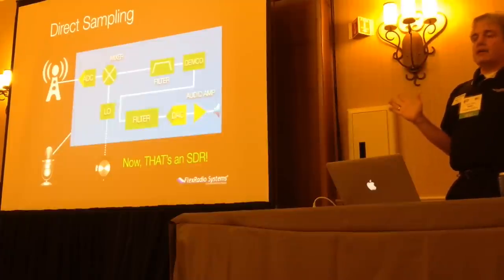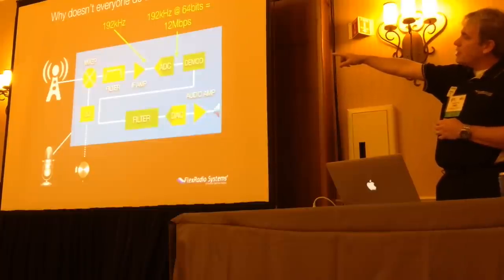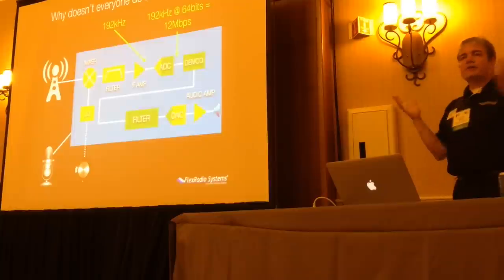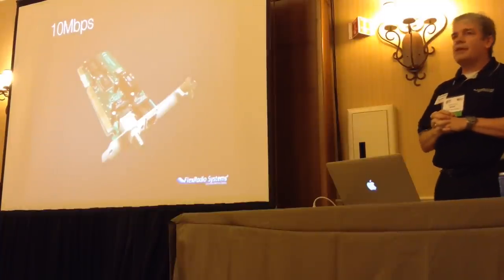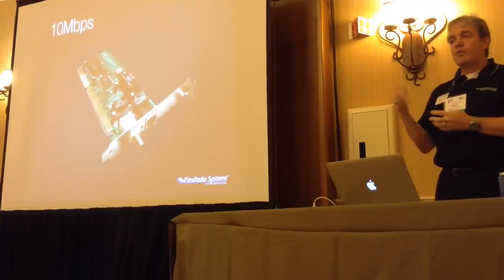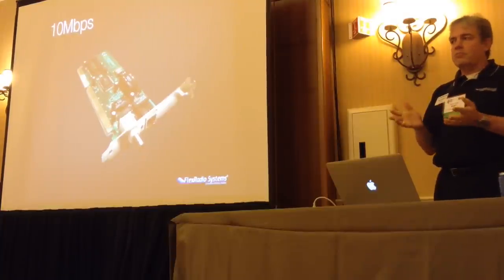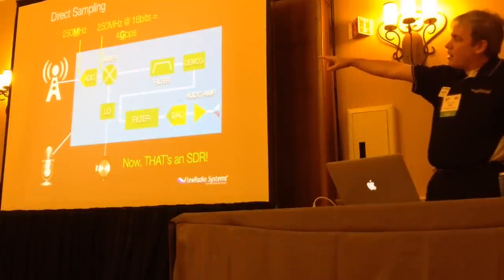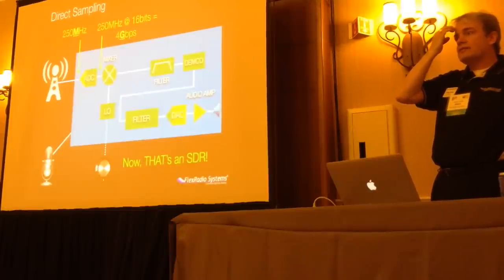So why isn't everybody doing this if it's better? In the older architecture with ADC after the demodulator, you might take 192 kHz and get 192 kilo-samples at 64 bits — about 12 megabits per second of data. By today's standards, 12 megabits isn't a lot and you could process it in a small processor. But with the direct sampling radio, you're pulling in several hundred megahertz of signal at 16 bits — about 4 gigabits per second worth of data. That's a tremendous amount to process in an inexpensive radio.